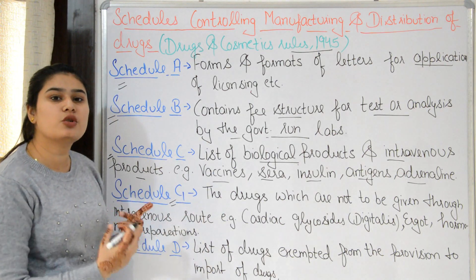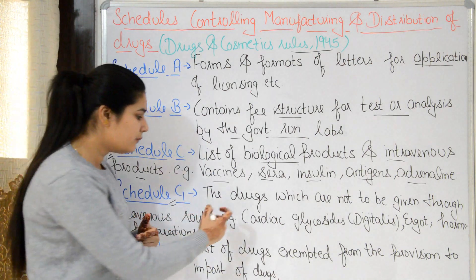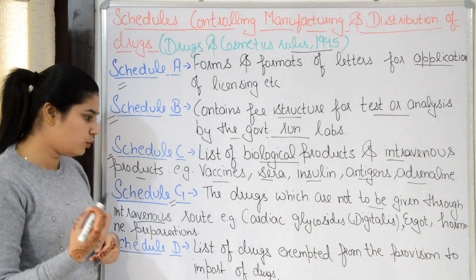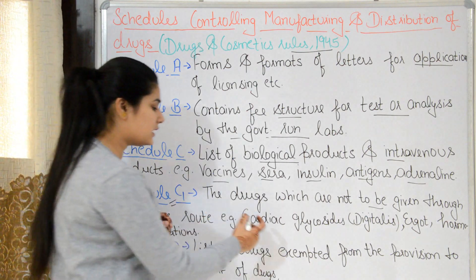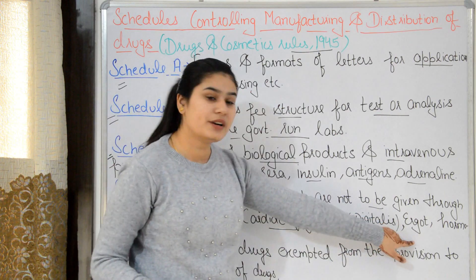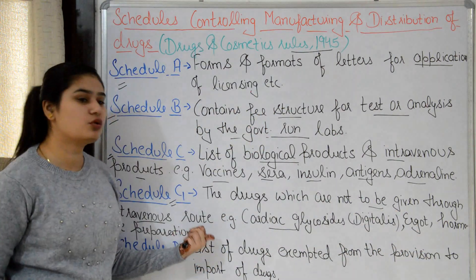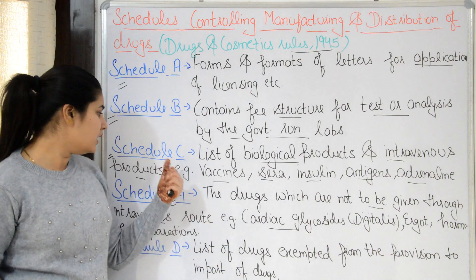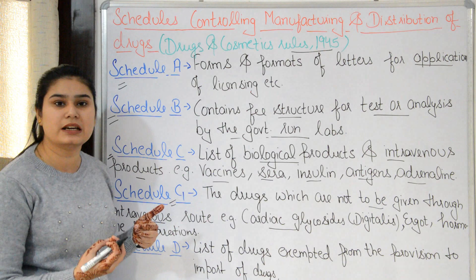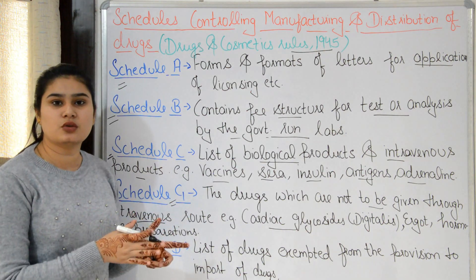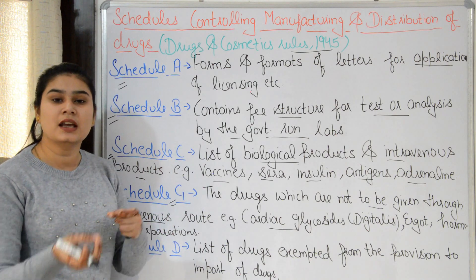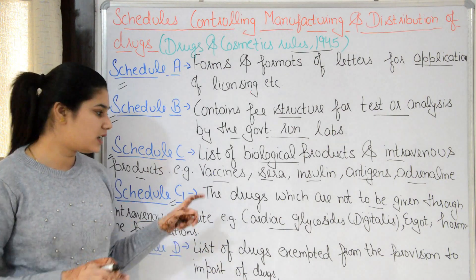Under Schedule C, there are also drugs not to be given through the intravenous route — for example, cardiac glycosides, digitalis, ergot derivatives, and hormonal preparations. Schedule C1 covers drugs that can only be sold under a special license, whether the seller is a doctor or pharmacist.